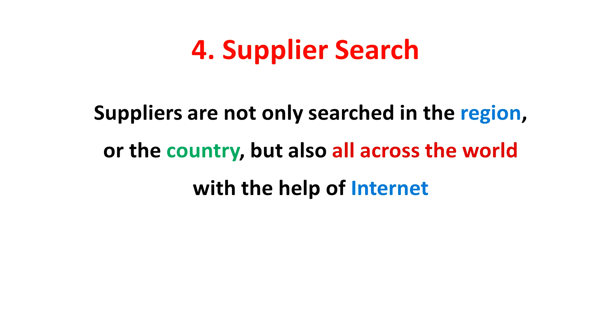PVA is a regular feature in the day-to-day production process in every manufacturing plant. The fourth stage is Supplier Search. In the last 20 years, the market has changed a lot due to globalization and advancement in communication technologies like the internet and mobile technology. Now suppliers are not only searched in the region or in the country, but also all across the globe with the help of the internet, with various websites helping to find the right supplier.